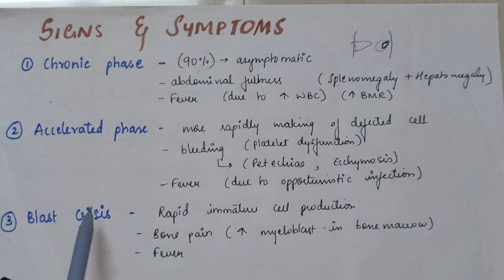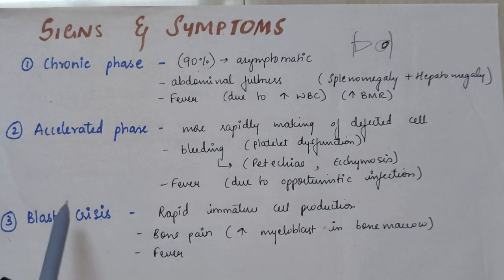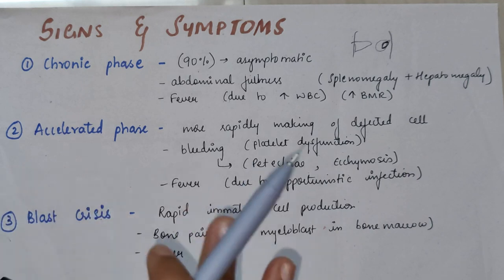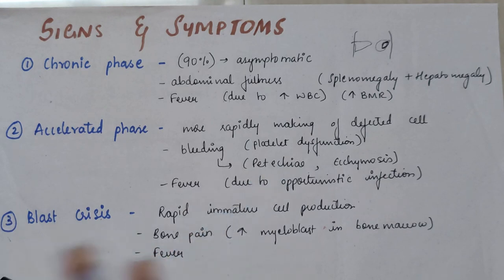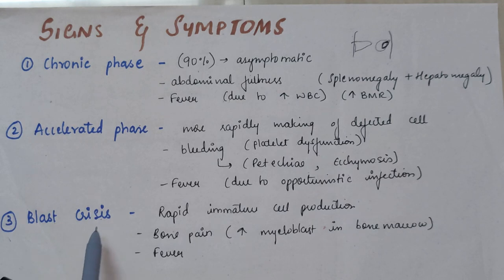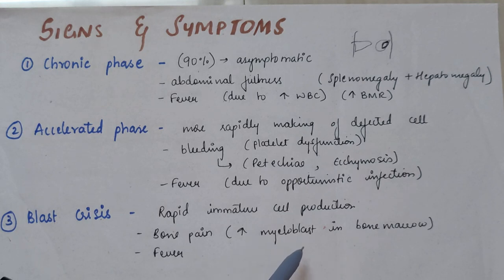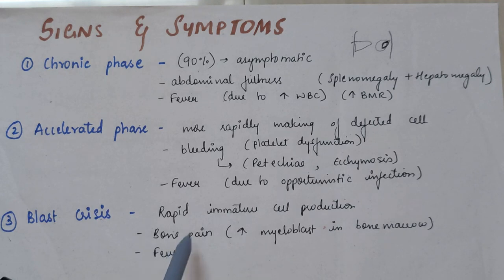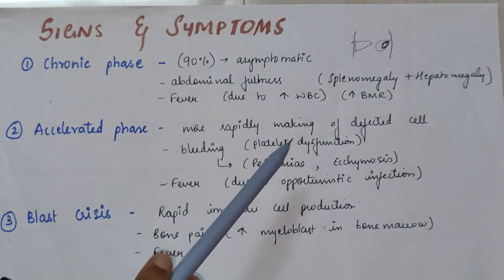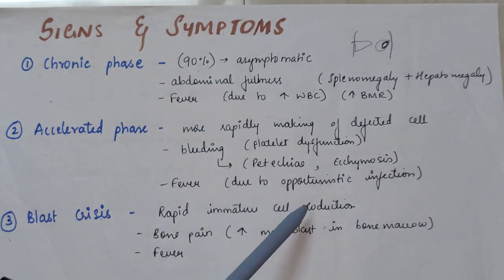The third phase is blast crisis. There is rapid immature cell production, which leads to bone pain because there are more myeloblasts in the bone marrow. Fever can also be seen, either due to increased WBCs or opportunistic infections.